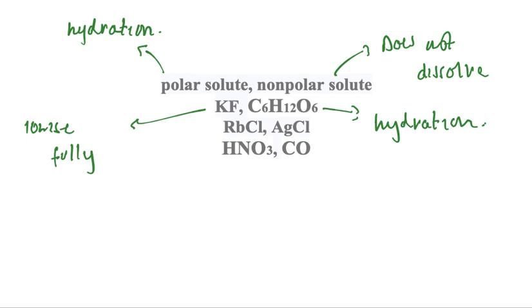Next we have RbCl versus AgCl. RbCl is a soluble ionic compound; it ionizes to exist as Rb+ and Cl-.